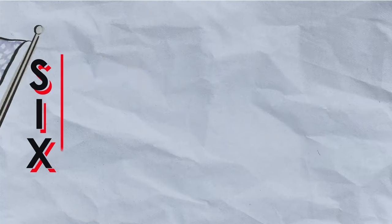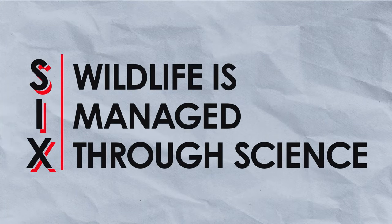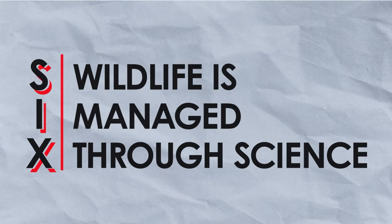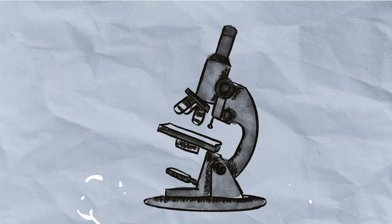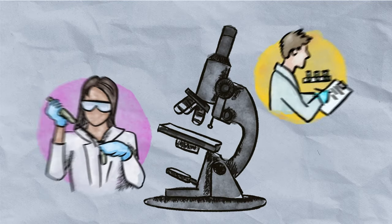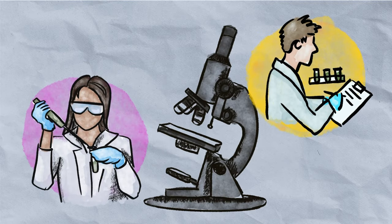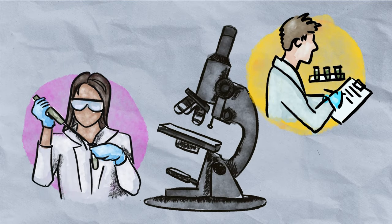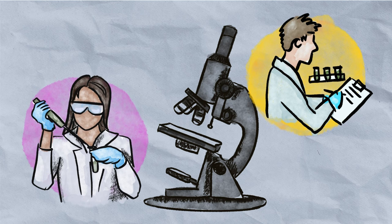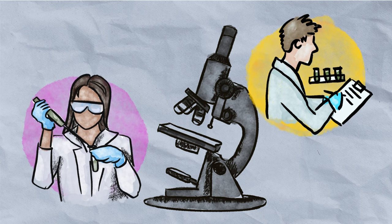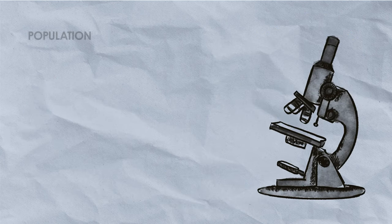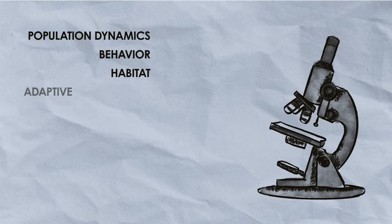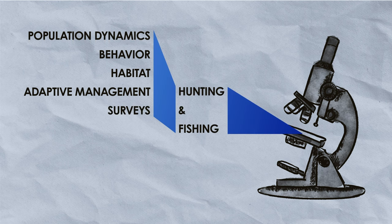Six: wildlife is managed through science. Science is the starting point for all management and decision-making regarding wildlife. This might include studies of population dynamics, behavior, habitat, adaptive management, and surveys of hunting and fishing.